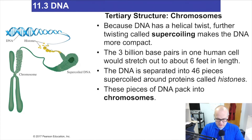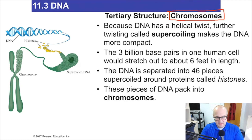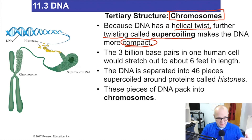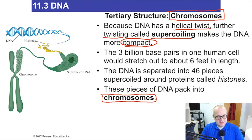The tertiary structure involves chromosomes — that's how your body stores its DNA, wrapped up neatly so that needed sections can be found again. Because DNA has a helical twist, further twisting called supercoiling makes the DNA more compact. With three billion base pairs, your body needs to store that somewhere neatly so it can be reaccessed when needed, forming chromosomes — a small, concise package.